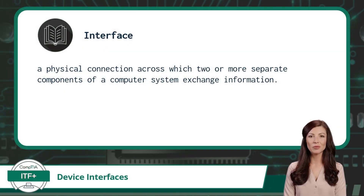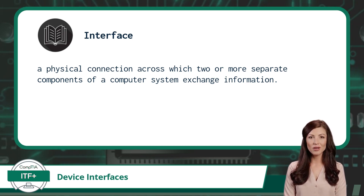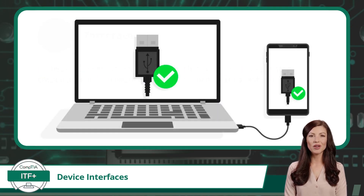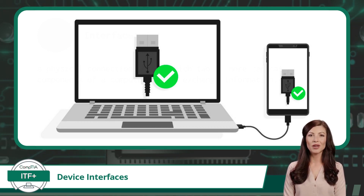When dealing with computing components, an interface is a physical connection across which two or more separate components of a computer system exchange information. Each interface type will conform to a standard. These standards are really what we will be talking about in this exam objective. The interface standards create a uniform way of encoding, transmitting, receiving, and decoding the binary bits being sent from one computing device to another.